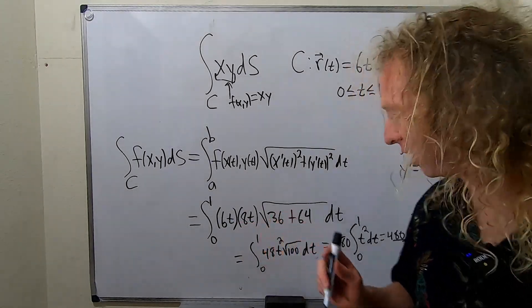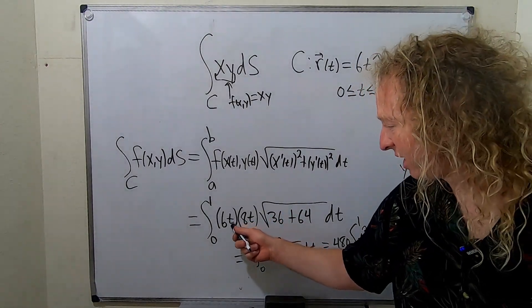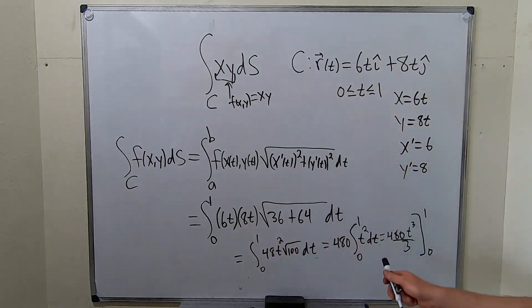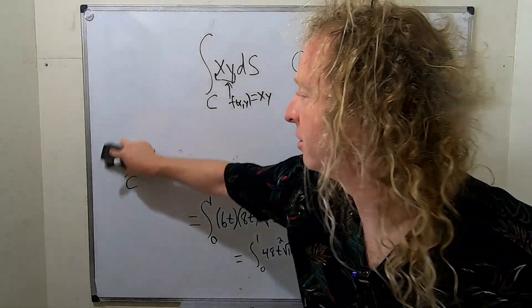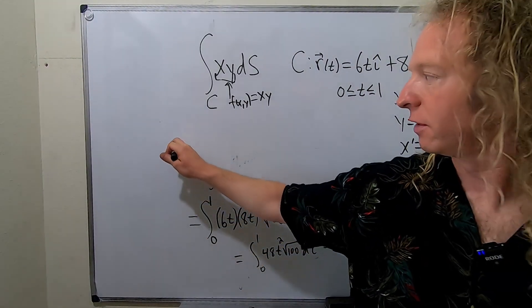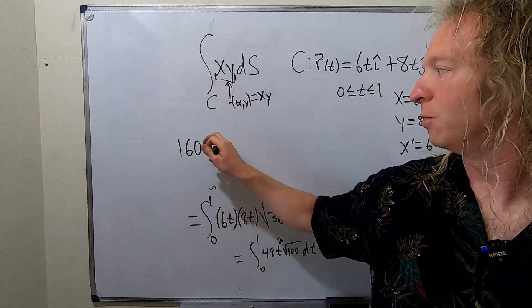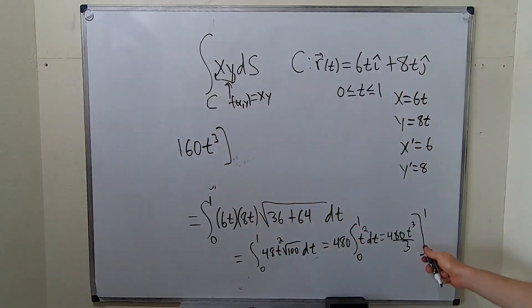So I messed up there, but I caught it, thankfully. So t times t is t squared. And then here we have a t squared. So when we integrate, it becomes t cubed. This is kind of convenient. 3 goes into 480 160 times. So let's go ahead and simplify that. So 160 t cubed. And we're going from 0 to 1.